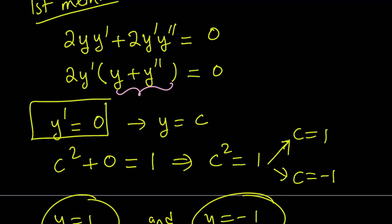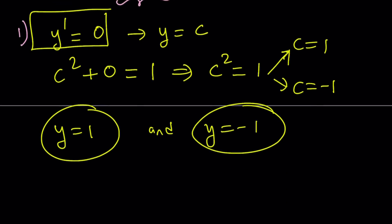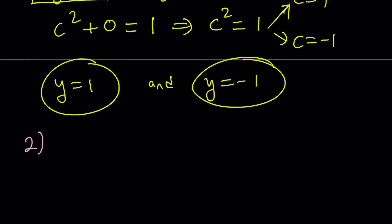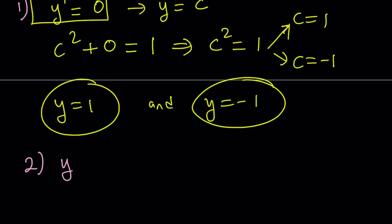For Case 2, we have y double prime plus y equals 0. When you think about a problem like this, you're differentiating a function twice and getting the opposite of the function, because their sum is 0. So what kind of functions will satisfy that?